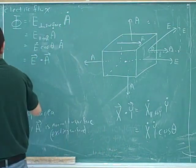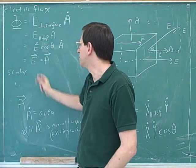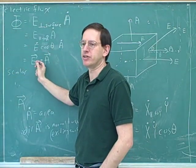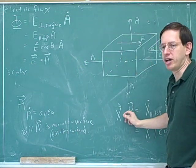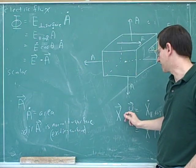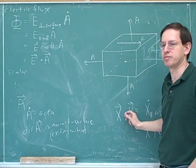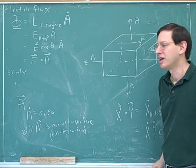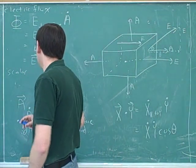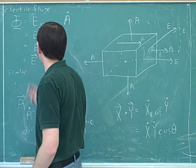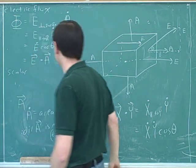Incidentally, the electric flux is a scalar. Even though it's based on vectors, it's a scalar. Any dot product is a scalar — sometimes called the scalar product. It doesn't have a direction; it just has a magnitude given by this formula.